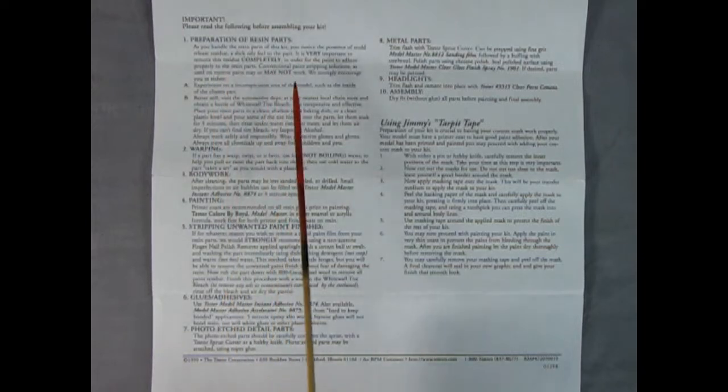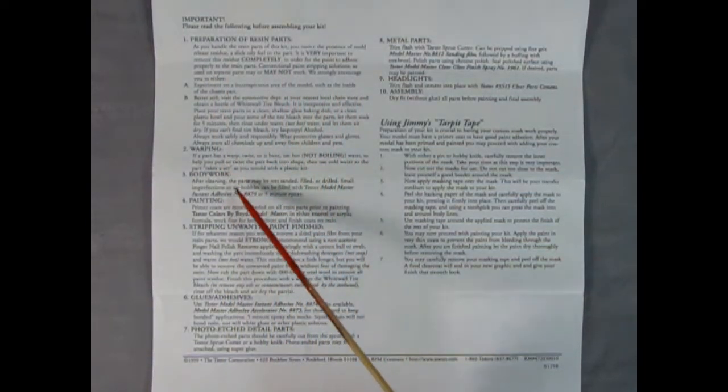Jimmy Flintstone has also given us a long description of the preparation of resin parts, and what happens if the part warps, how to do bodywork painting, and stripping unwanted paint finishes.